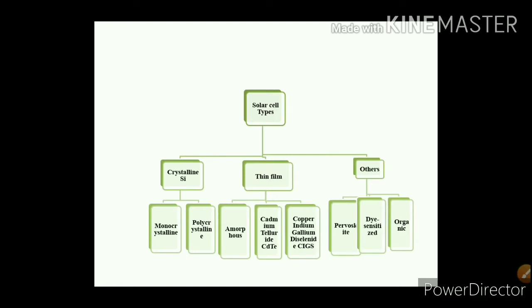Solar cells are made up of silicon, which is a semiconductor material and is abundantly available on earth. Sand and quartz are the forms in which you will find silicon or silica. The silica available on earth is an impure form of silicon, and therefore in order to extract pure silicon out of it, we have to process it under very high temperatures of approximately 1900 degrees centigrade.